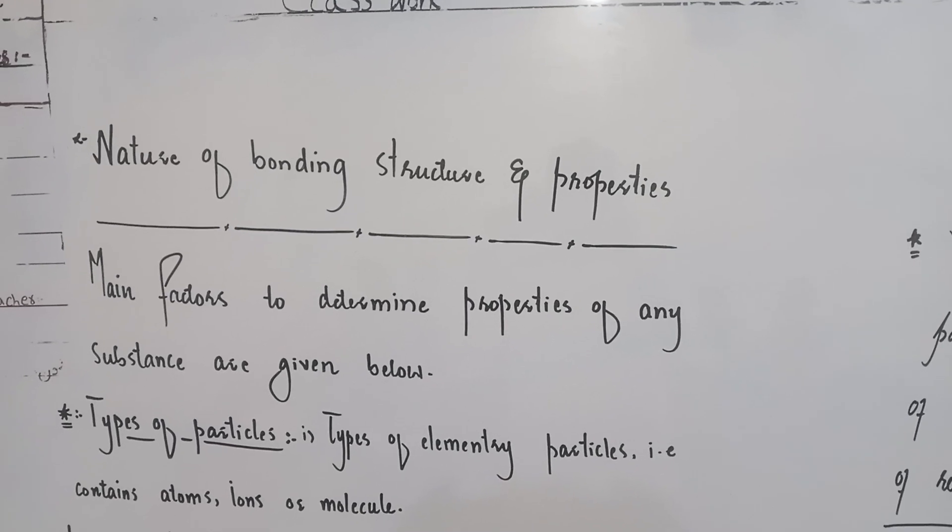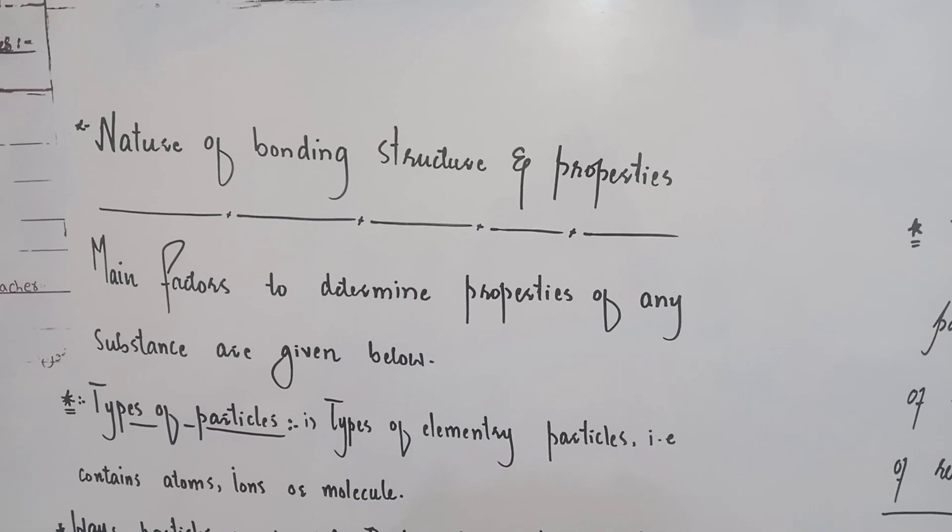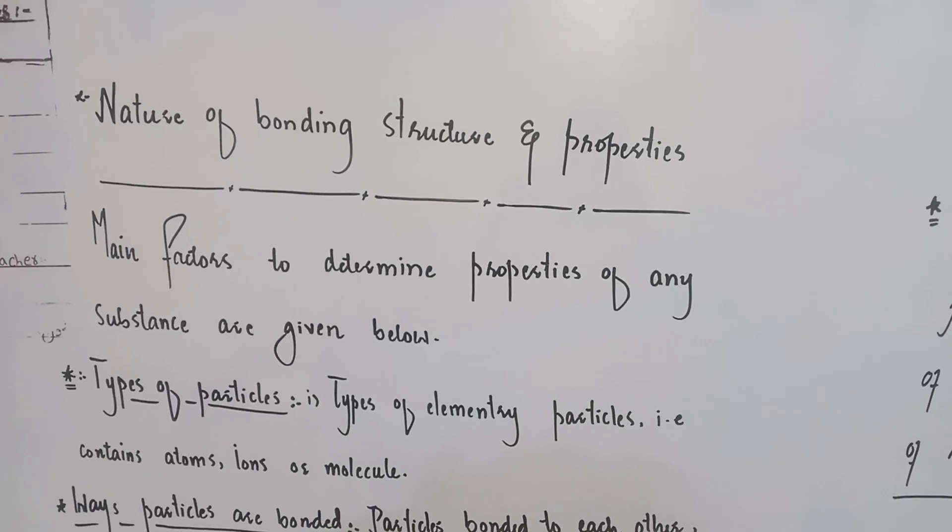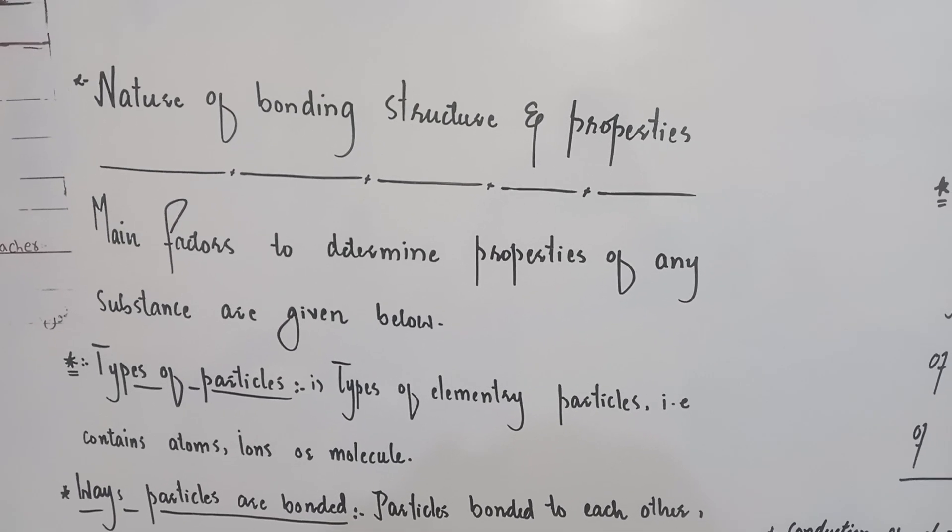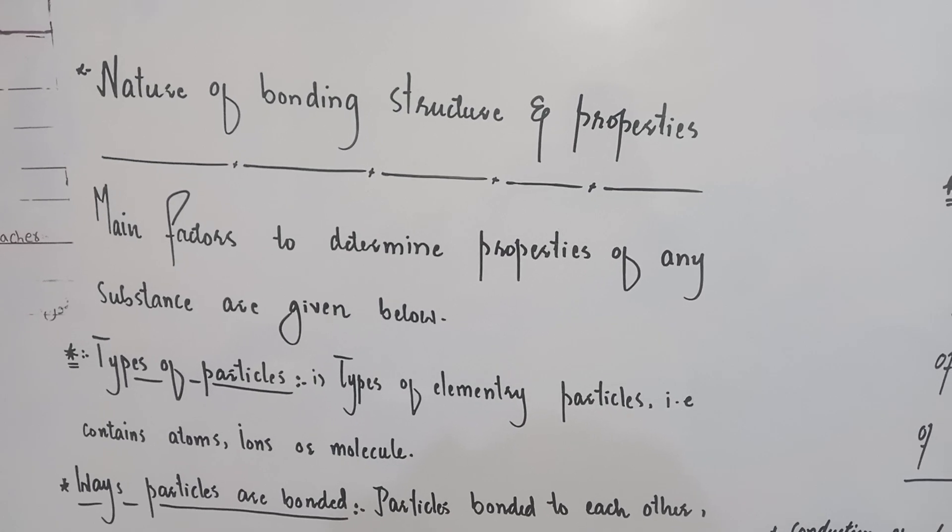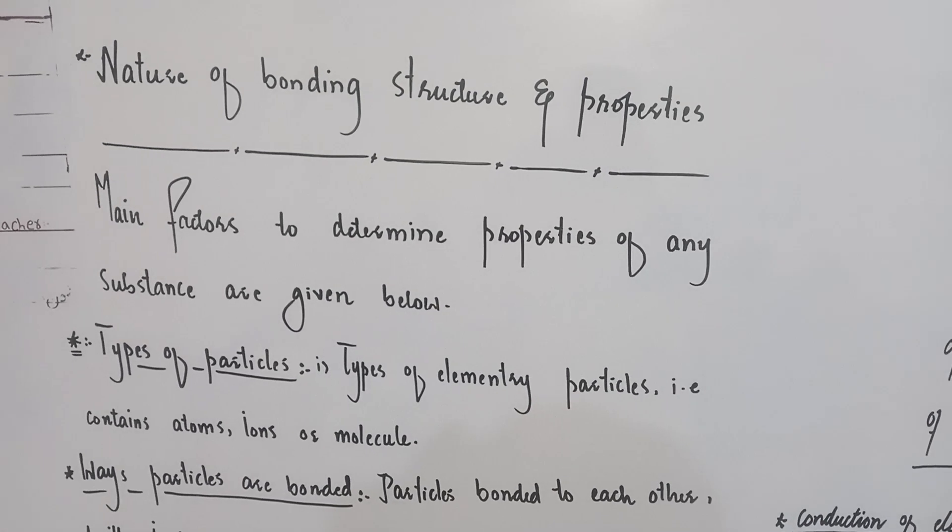Nature of bonding, structure and properties. Main factors to determine properties of any substance are given below. Types of particles: types of elementary particles, i.e., contains atoms, ions or molecules.